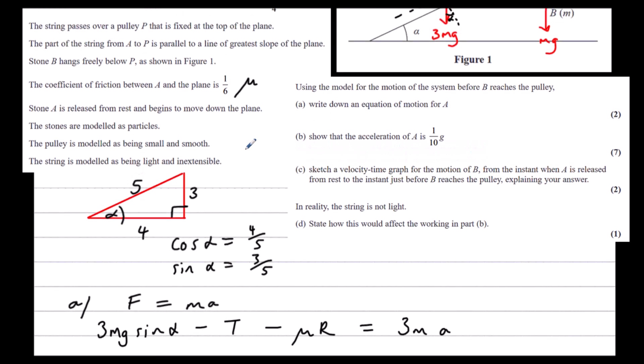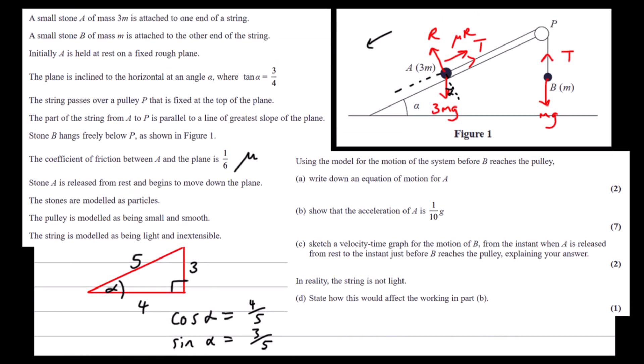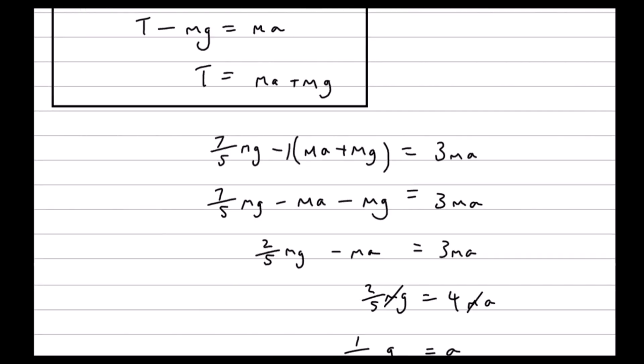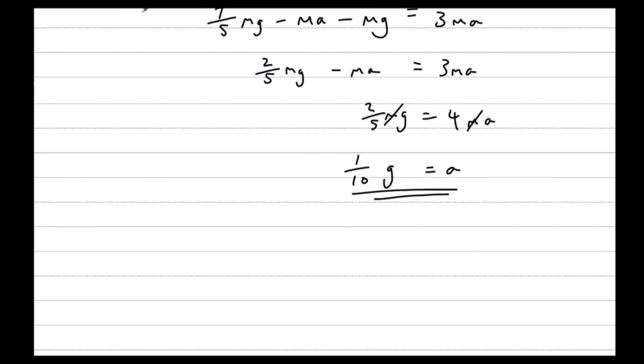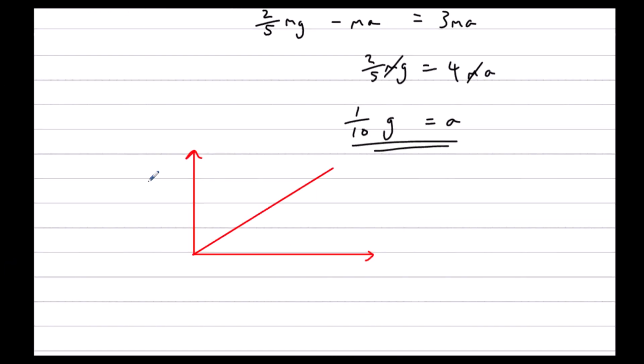Sketch a velocity time graph for the motion of B from the instant when A is released from rest to the instant before B reaches the pulley. Explain your answer. So it starts from rest with no velocity, and then it moves with constant acceleration. That would be a constant gradient. So velocity against time. Just a note to say it will move with constant acceleration.